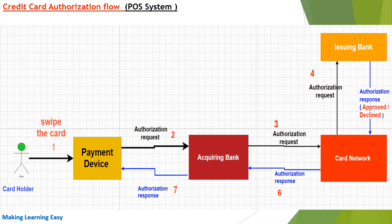Once the issuing bank receives the authorization request, it performs checks such as whether the card is not blocked, not expired, is active, and whether the customer has sufficient funds to make the payment. Since all checks pass, the issuing bank sends the response as approved back to the card network. If any check fails — for example, the customer doesn't have sufficient funds — the issuing bank declines the authorization and communicates the same to the card network. In both cases, whether declined or authorized, the issuing bank triggers a message to the customer via email or SMS.